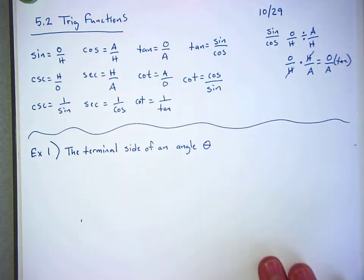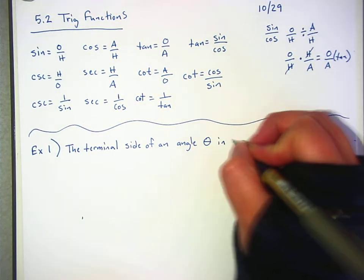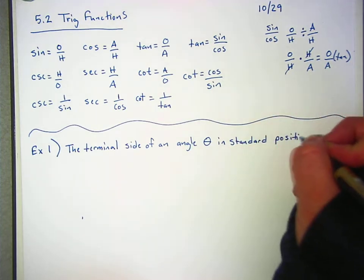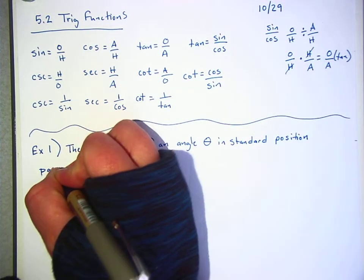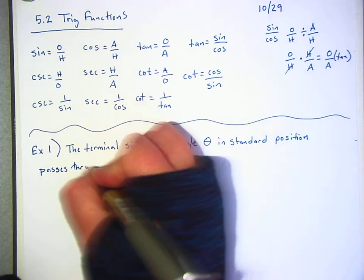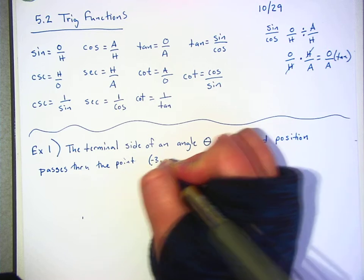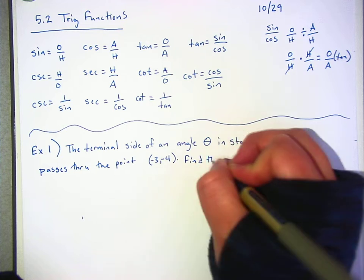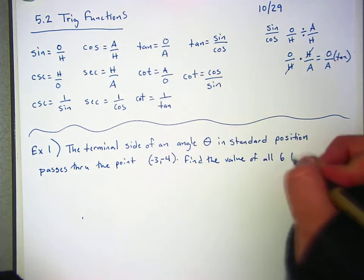Again, pause the video if you need to copy this down. All right. So, the terminal side of an angle theta in standard position passes through the point (-3, -4). And we're supposed to find the value of all 6 trig functions.